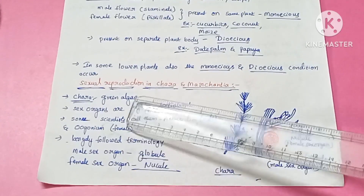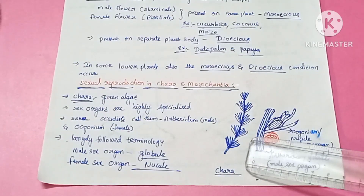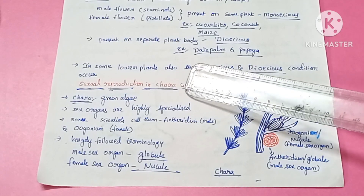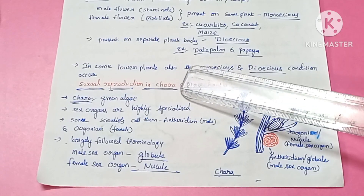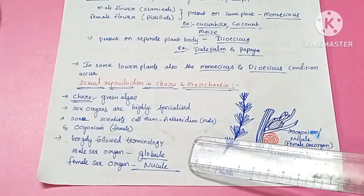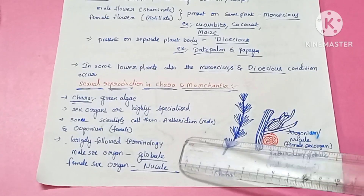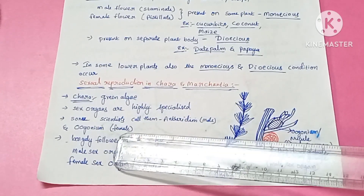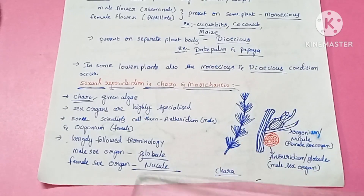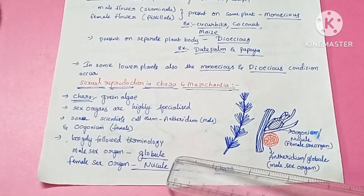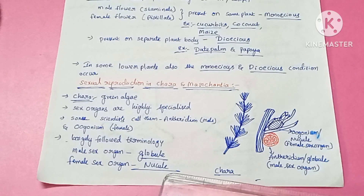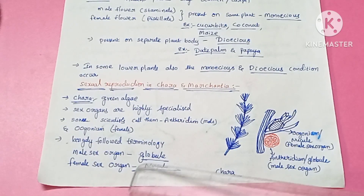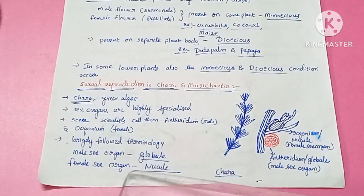Chara is a green alga. Its sex organs are highly specialized. Scientists call the male sex organ antheridiun, but the mostly preferred terminology is that the male sex organ is called globule and the female sex organ is called nucule.